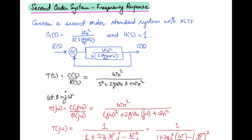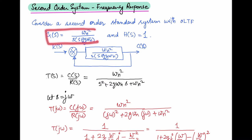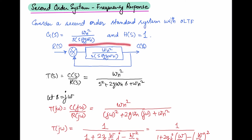In this video we will discuss a second order system and some frequency response parameters which can be obtained by analyzing the transfer function. The standard form is considered with a unity feedback system, so H(s) = 1, and the closed loop system is represented by the plant transfer function in the forward path with unity feedback.